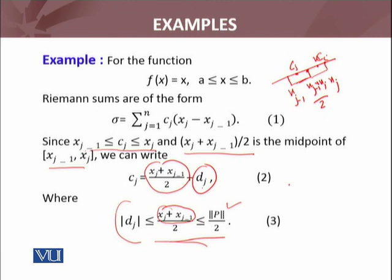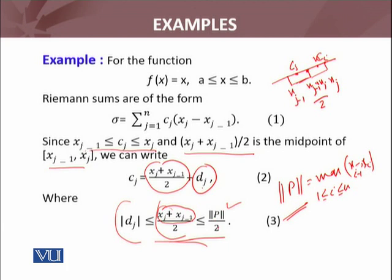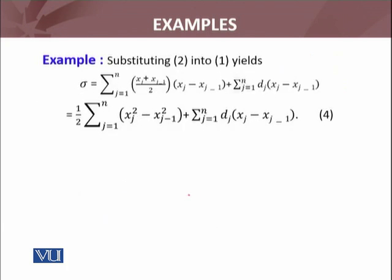The norm of the partition ||P|| is the maximum length of any subinterval xi - xi-1. Therefore |dj| ≤ ||P||/2 — this is the key bound. Substituting cj = (xj-1 + xj)/2 + dj into the Riemann sum and expanding, the sum becomes: summation of (xj² - xj-1²)/2 plus summation of dj(xj - xj-1).